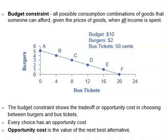Hi there, welcome to HowToEcon. Let's take a look at how people make choices. People make choices to buy or do something based on their preferences and budget constraint. In economics, budget constraint shows all possible consumption combinations of goods and services that someone can afford, given the prices of those goods and services, when all income is spent. Let's take a look at an example of budget constraint.